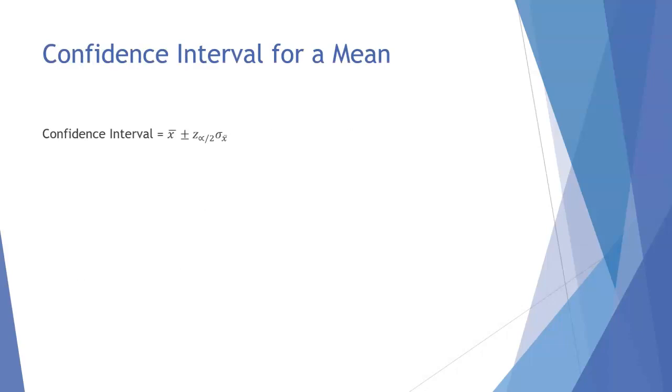Now, once we have our point estimate and we have our margin of error, then we can start to put them together to get our confidence interval. So you take that point estimate, your sample mean, in this case x bar, and we do plus and minus our margin of error. So if we add our margin of error, that's our upper confidence limit. And if we subtract our margin of error, that's our lower confidence limit.